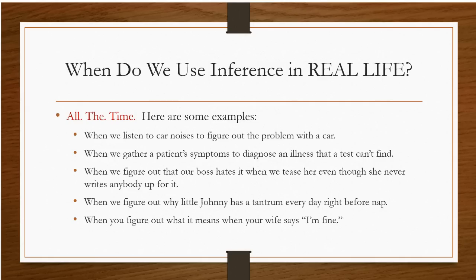When we gather patients' symptoms to diagnose an illness that a test can't find — a blood test is great, but sometimes that doesn't give us the answer — we've got to put together a set of other things and infer what the illness is from those symptoms. That's an inference skill. When we figure out that our boss hates it when we tease her, even though she never writes anybody up for it, that's inference. You've got to look at what's being implied, look at the look on her face, know her cues, and make an inference — say, I don't think she likes this very much.